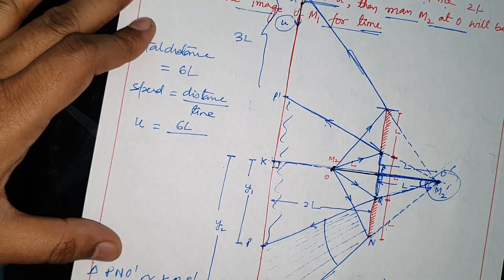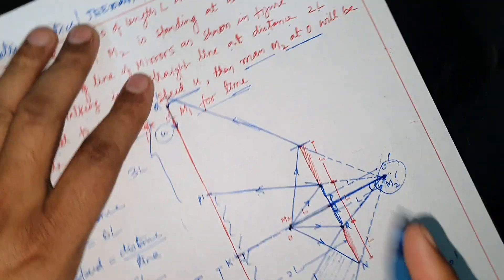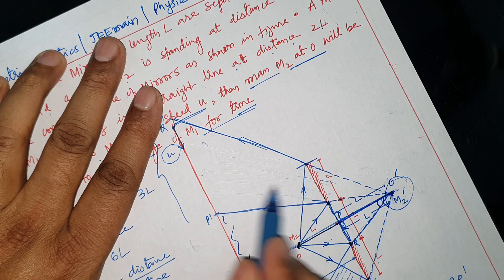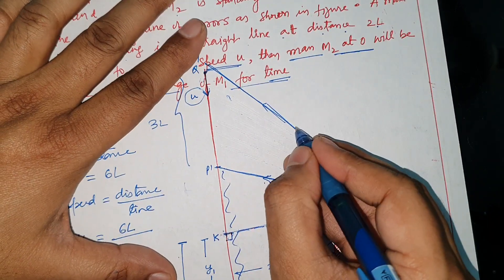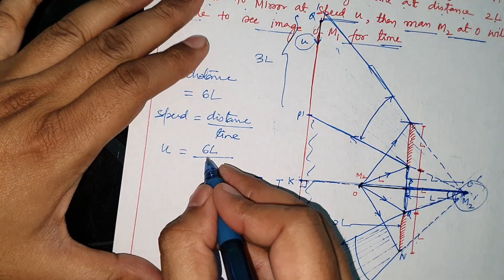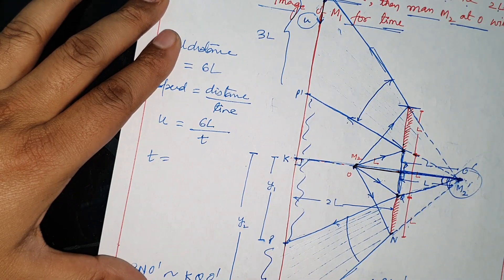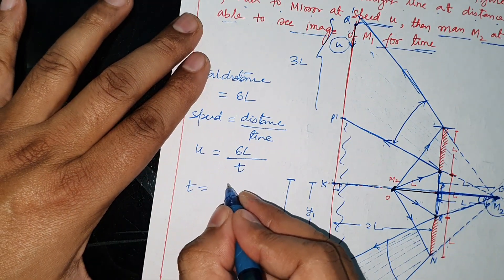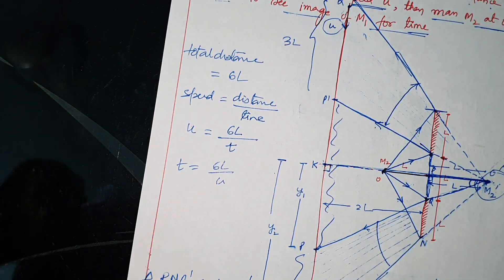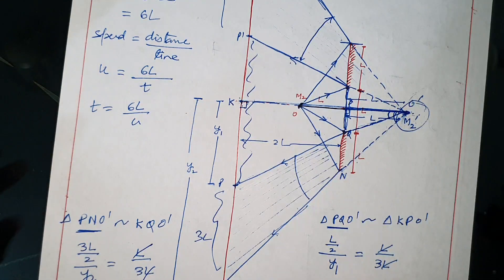The total distance is 6L. The field of view corresponds to this 6L distance. So time equals 6L divided by U. The answer is 6L/U. I hope you learned from this — thank you.